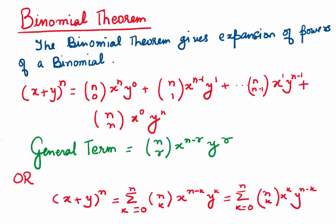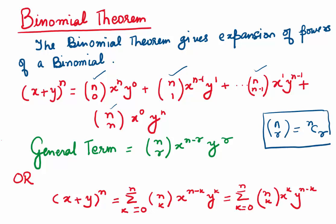Here, look at the formula: x plus y to the power n. We are expanding a binomial x plus y and the power is n. In the expansion, we have powers of x and y, and we have some coefficients: n0, n1, nn-1, nn. This is nothing but your nCr, which you have already done in the previous video. These coefficients are nothing but nCr, and we know nCr is n factorial upon r factorial times n minus r factorial.